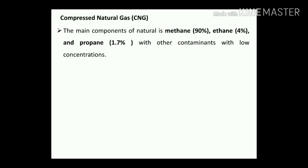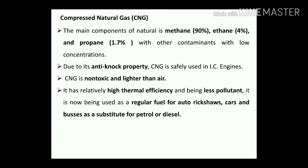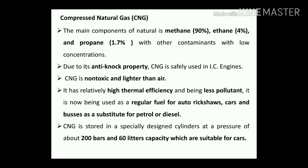CNG — compressed natural gas: the main components are methane 90%, ethane 4%, and propane 1.7% with other contaminants at low concentrations. Due to its anti-knock properties, CNG is safely used in IC engines. CNG is non-toxic and lighter than air. It has relatively high thermal efficiency and being less pollutant, it is now being used as a regular fuel for auto-rickshaws, cars, and buses as a substitute for petrol and diesel. CNG is stored in specially designed cylinders at a pressure of about 200 bars and 60-litre capacity suitable for cars.